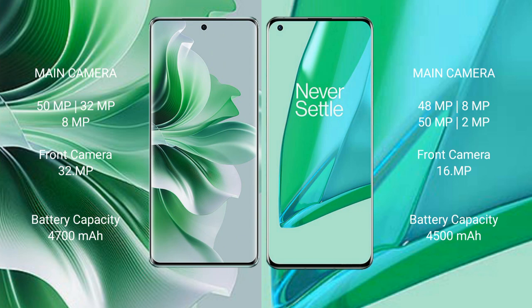Oppo Reno 11 Pro features a triple rear camera setup: 50MP plus 32MP plus 8MP, and a 32MP front camera. OnePlus 9 Pro features a quad rear camera setup: 48MP plus 8MP plus 50MP plus 2MP, and a 16MP front camera.